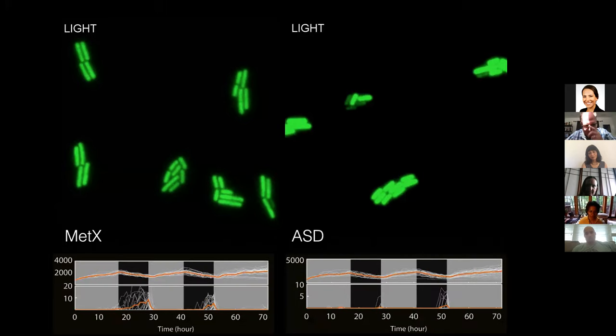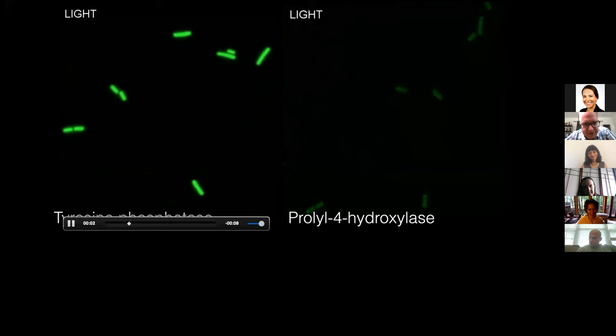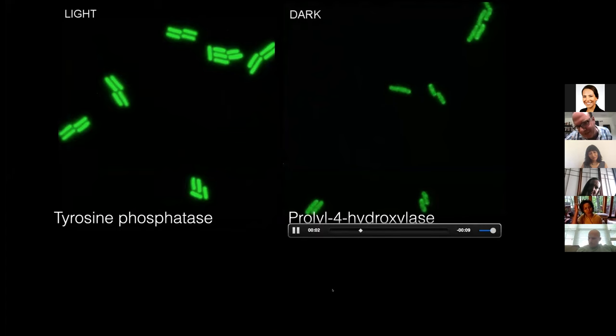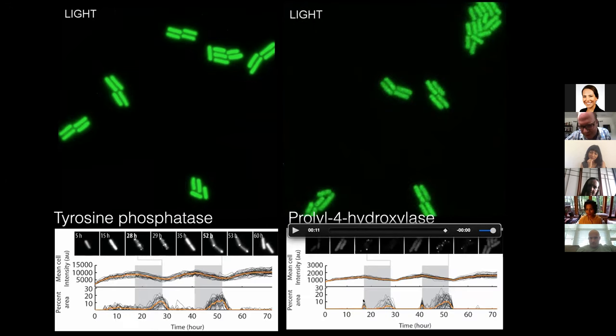Here's quantification. Each of these lines is single cells, basically the number of spots detected. And the top line is total fluorescence. Here's another one, tyrosine phosphatase, similar kind of story. This one's kind of interesting, prolyl-4-hydroxylase. You actually see two waves of spots at night. You see an initial wave and then a later wave. So that's kind of something exciting going on there that we don't totally understand.